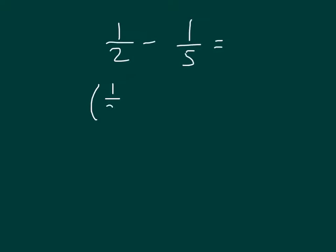We have 1 half. We're getting equivalent fractions. We'll multiply by 5 and multiply by 5, which is just the other denominator. If we think of multiples of 2, it's 2, 4, 6, 8, 10, and then we do get to that 2 times 5 before anything else. That's why we are using the other denominator.